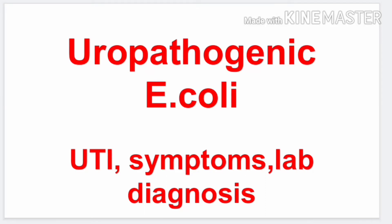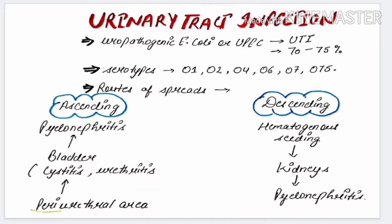Hello and welcome everyone. In this lecture we are going to discuss uropathogenic E. coli, the causative agent of UTI. In this video we will focus on the symptoms and lab diagnosis of UTI. We have already discussed the morphology, pathogenesis, virulence factors and general lab diagnosis of E. coli in Part 1 and Part 2. Now we will focus on urinary tract infections.